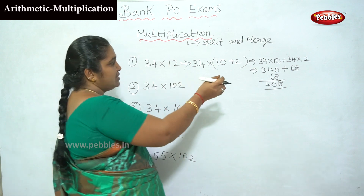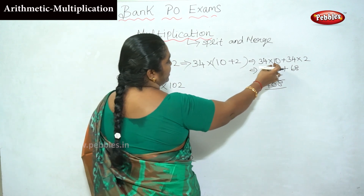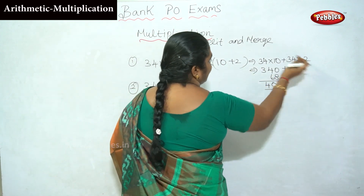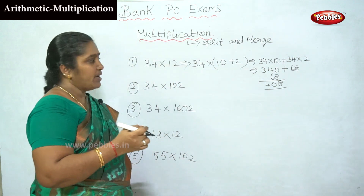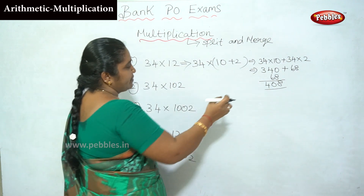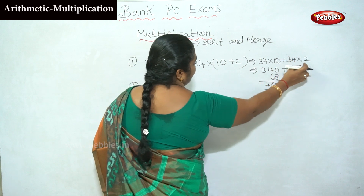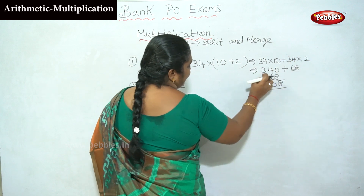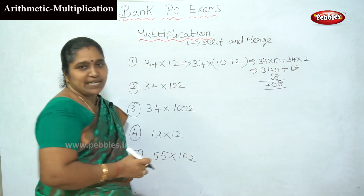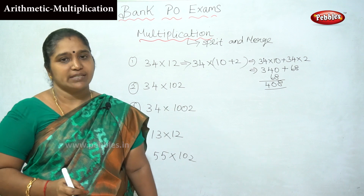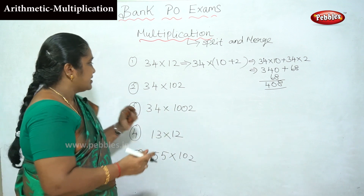This is an easy way. First, 34 into 10 plus 34 into 2. 34 into 10 is 340. 34 into 2 is 68. What is the answer? 408. 408 is the answer.